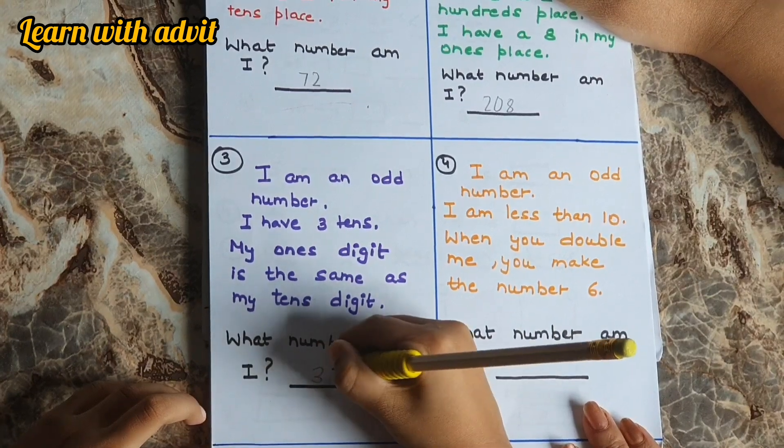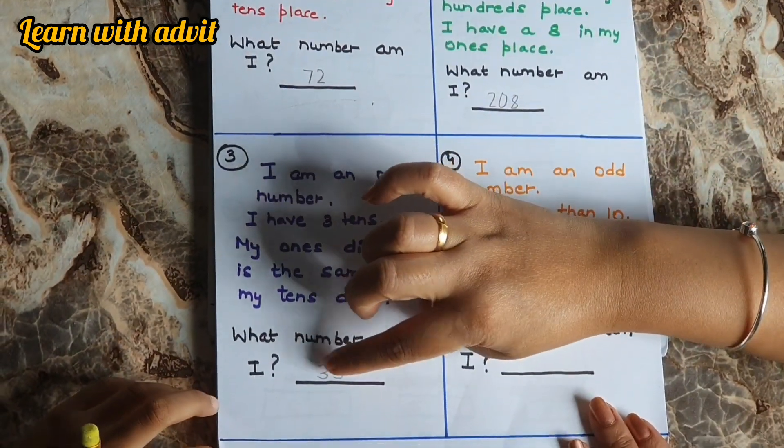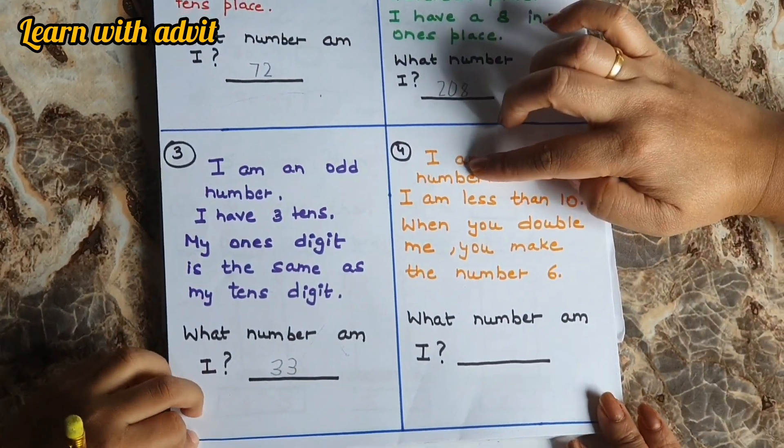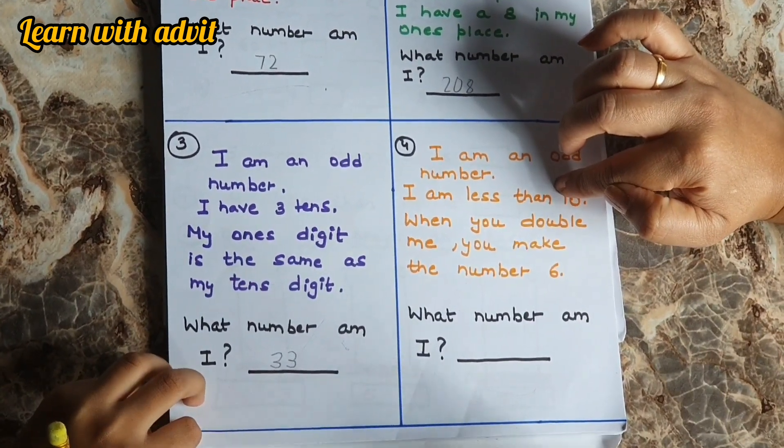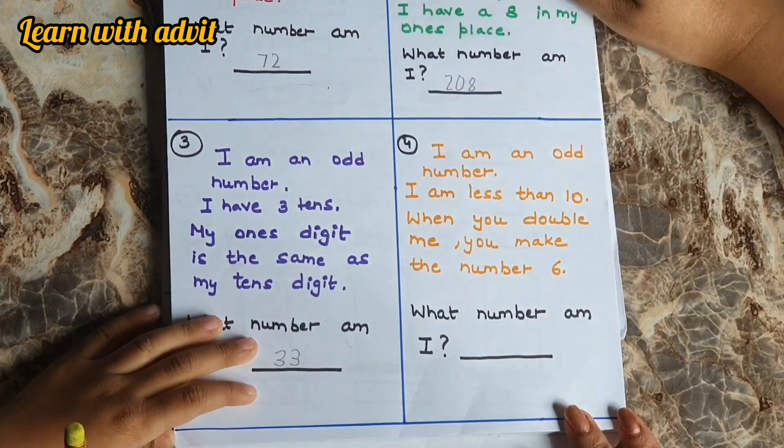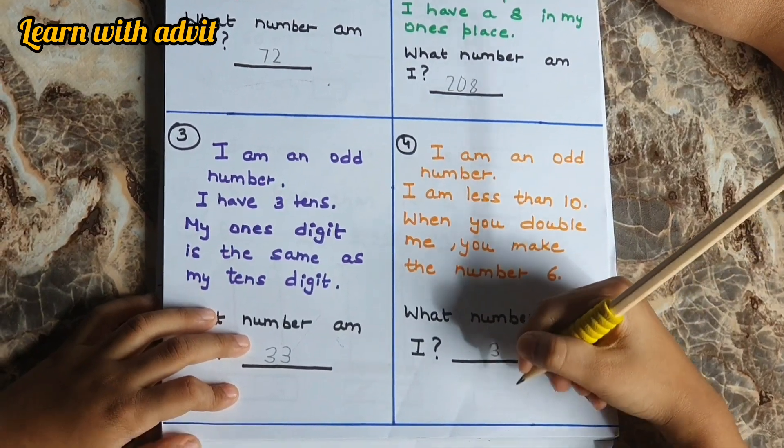Because the number is the same as tens and ones, and 33 is an odd number. I am an odd number again. I am less than 10. The number is less than 10 and odd. When you double me, you make the number 6. Three! Yes, 3 plus 3 is 6. Very good.